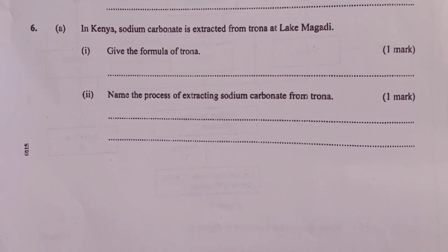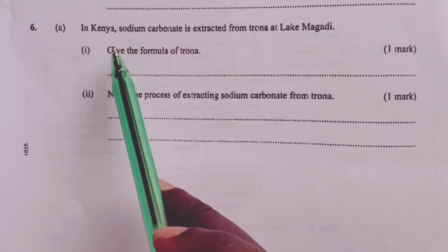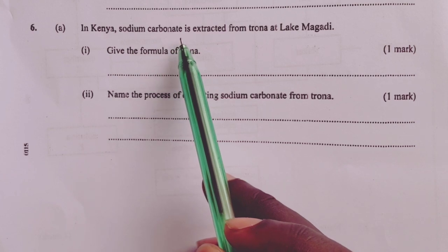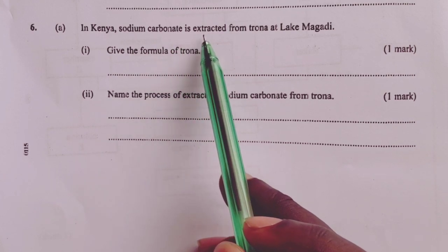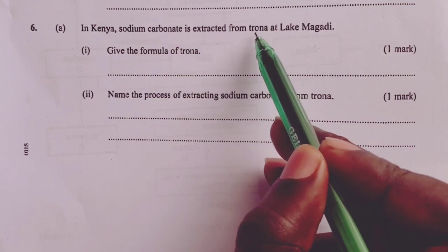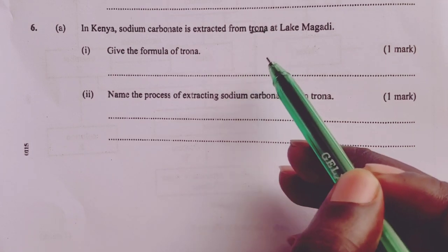This is the Solvay process as tested in the year 2018 KCSE Chemistry Paper 2, Question number 6, Part A. In Kenya, sodium carbonate is extracted from trona at Lake Magadi.